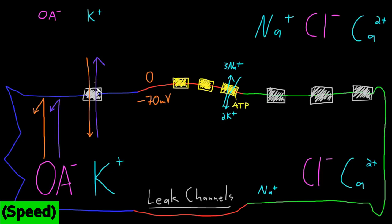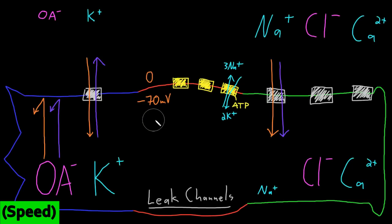For sodium ions, both the electrical force and the diffusion force strongly drive sodium into the neuron, since it's a cation attracted to the negative interior and its concentration is much higher outside. The equilibrium potential of sodium at typical concentrations is around positive 50 millivolts. However, the resting membrane permeability to sodium is only about four percent of that for potassium. Because some sodium enters through leak channels, bringing positive charges in, the resting potential settles around negative 60 millivolts rather than at the potassium equilibrium potential. When the membrane is permeable to multiple ions, the resulting membrane potential is a weighted average of the equilibrium potentials of those ions, weighted by their permeability.